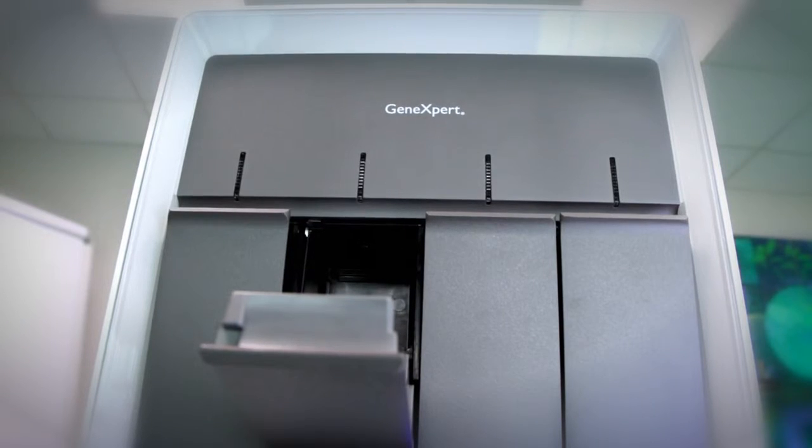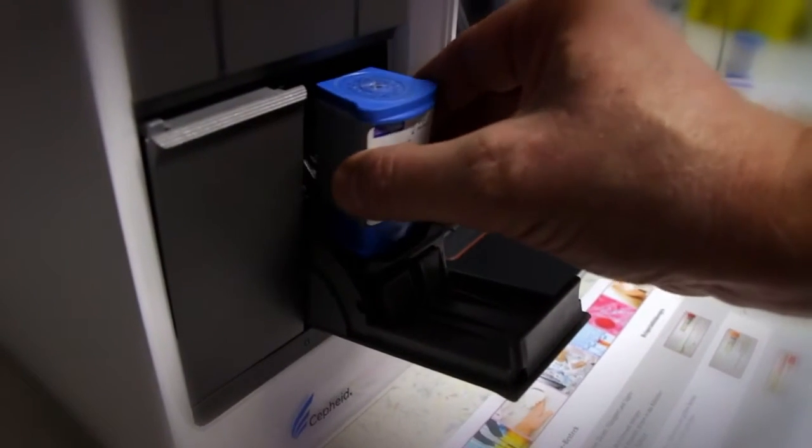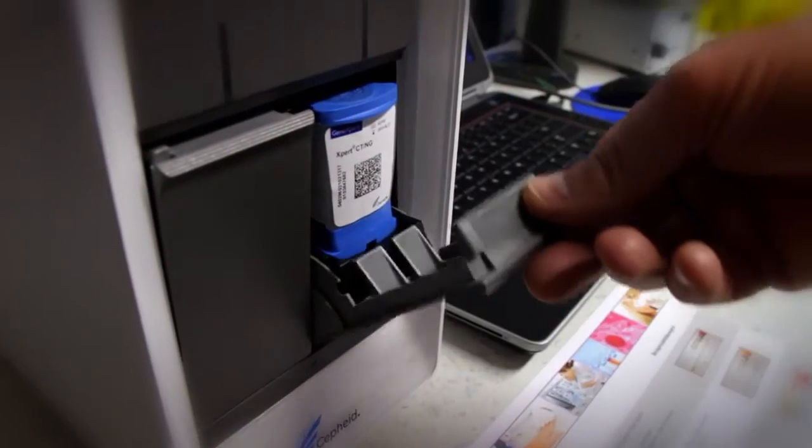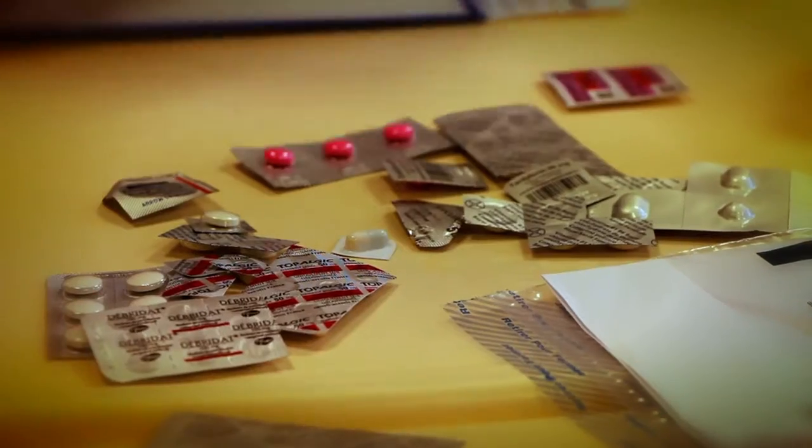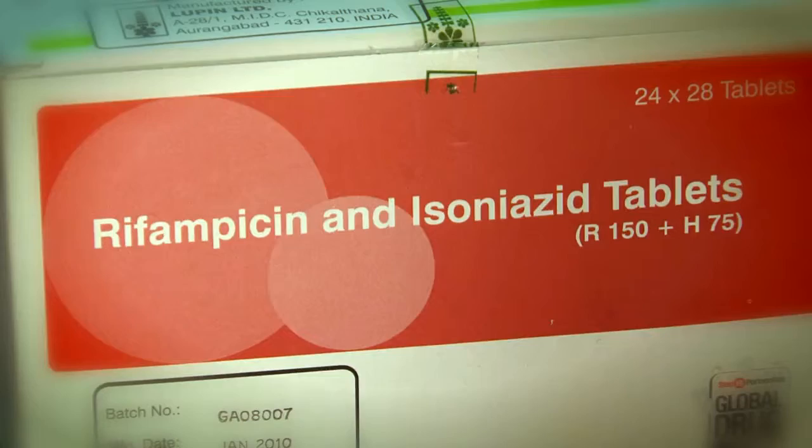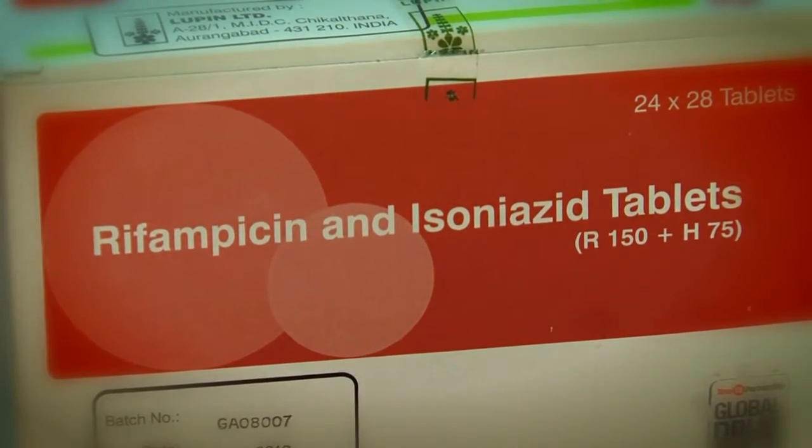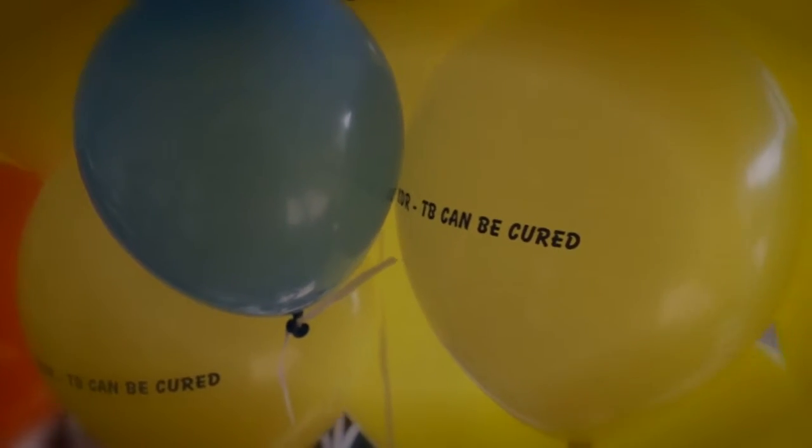A new diagnostic test has been available since 2011. Results are available in two hours and it can detect both tuberculosis and resistance to the main antibiotic. But we're still far from the ideal diagnostic test. For example, a rapid, reliable blood or urine test to be able to treat quickly, to interrupt transmission and to save the patient.